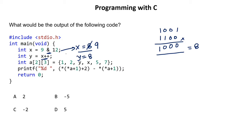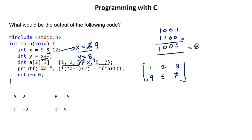After assigning Y = 8, X increments from 8 to 9. So currently Y = 8 and X = 9. Now we have a 2×3 array — 2 rows and 3 columns. Substituting X and Y, the matrix values become: first row: 1, 2, 8 (Y); second row: 9 (X), 5, 7. This is our 2×3 matrix.